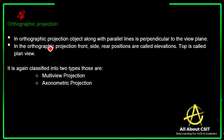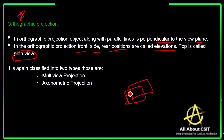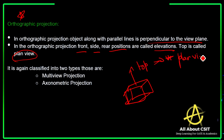In orthographic projection, the object's parallel lines are perpendicular to the view plane. The front, side, and rear positions are called elevations, while only the top position is called the plane view. Orthographic projection is classified into two types: multi-view projection and axonometric projection.